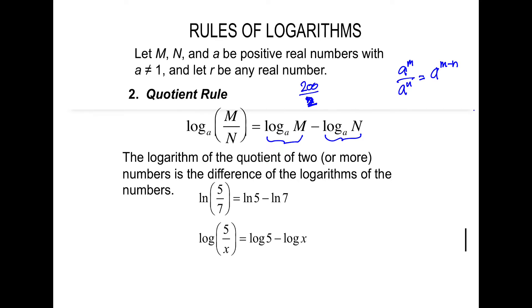So the m over n doesn't have to be presented to you as a fraction. You can take a whole number and break it into some sort of division if it somehow helps you. So ln of 5 over 7 is ln of 5 minus ln of 7, and we see the same thing with 5 and x. This allows us to separate x into one particular part of the expression.